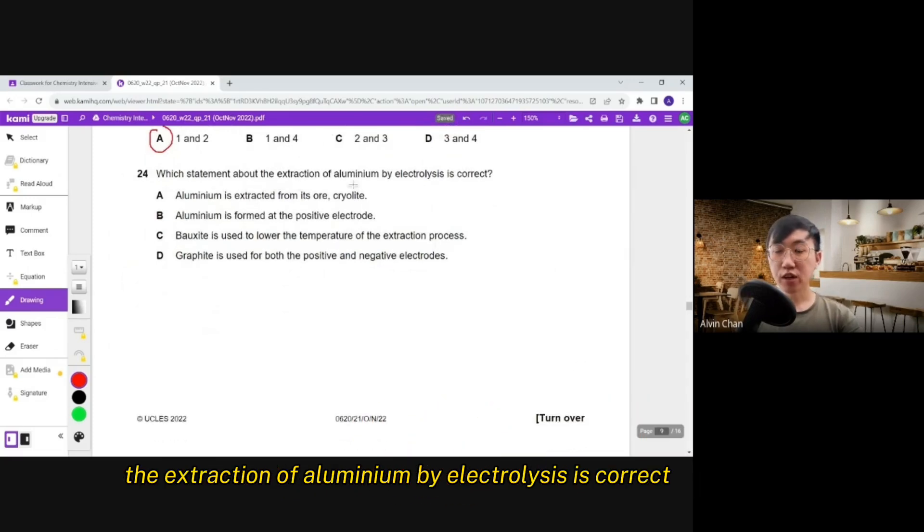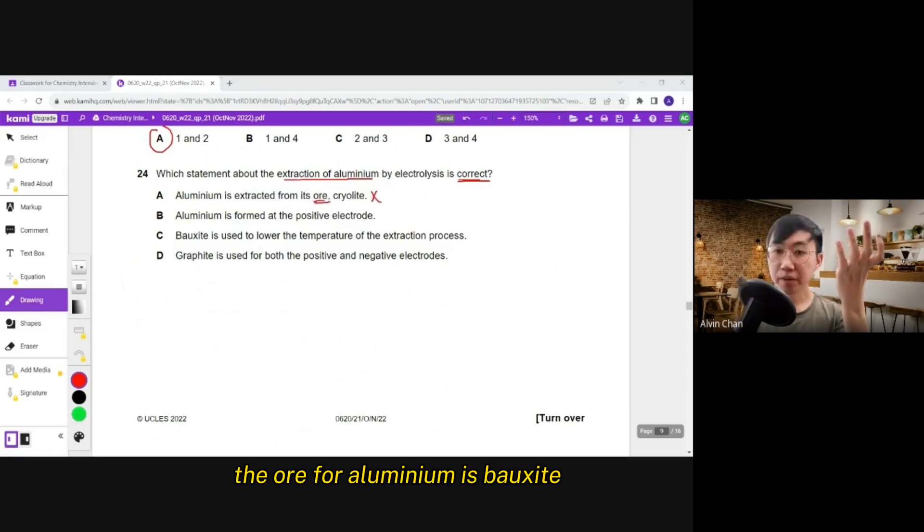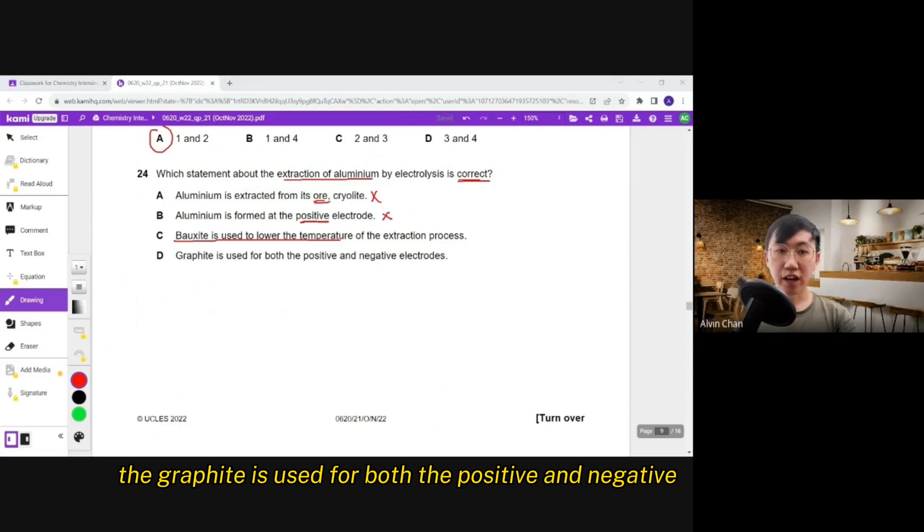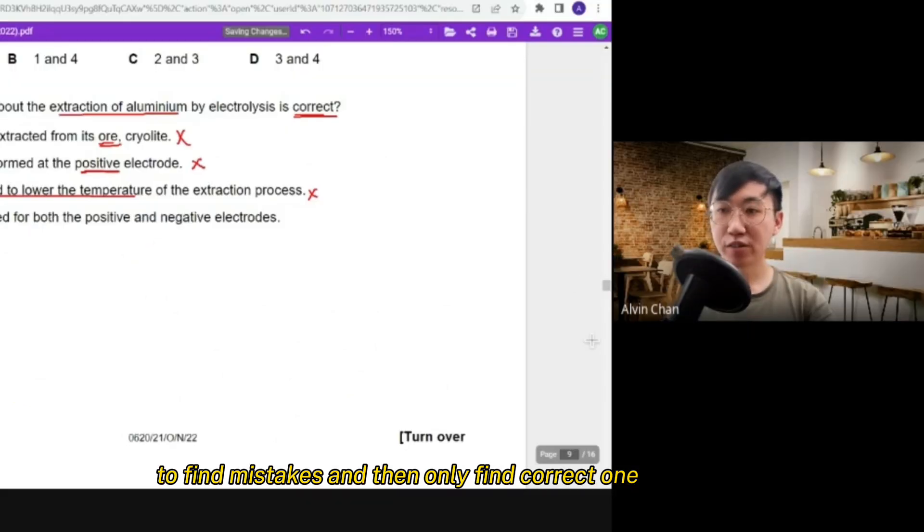Which statement about the extraction of aluminium by electrolysis is correct? So we need to find the correct statement for the extraction of aluminium. Number one. Aluminium is extracted from its ore cryolite. Wrong. The ore for aluminium is bauxite. Understand? Bauxite. So you know this statement is wrong. Aluminium is formed at the positive electrode. Wrong. It's always at the cathode side. Negative. Wrong. Bauxite is used to lower temperature. No lah. We don't say that. That is cryolite. The mistake is cryolite. D. Graphite is used for both the positive and negative. So this one seems to be the correct one. We found the mistake mark ABC. So therefore straight away go for D. So this is how we do the paper too. Find mistakes and then only find correct one.